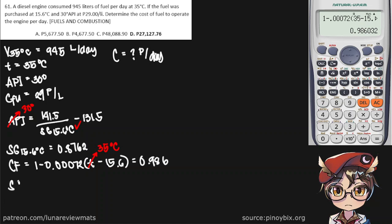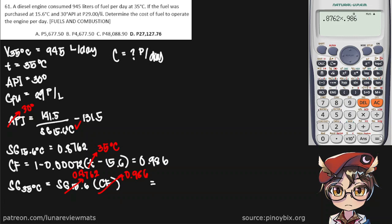Now we just need to multiply the correction factor by our SG at 15.6°C. Writing down the formula: SG at 15.6°C is 0.8762, and the correction factor CF is 0.986. Multiplying these together, we get a specific gravity of 0.864 at a temperature of 35°C.